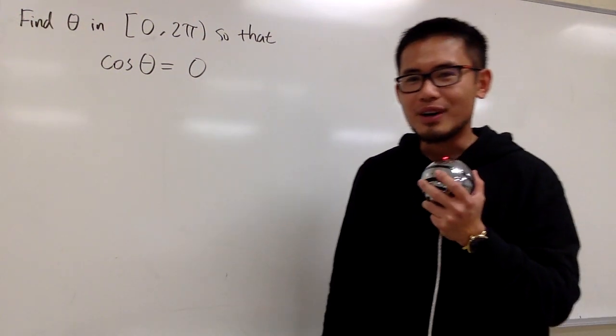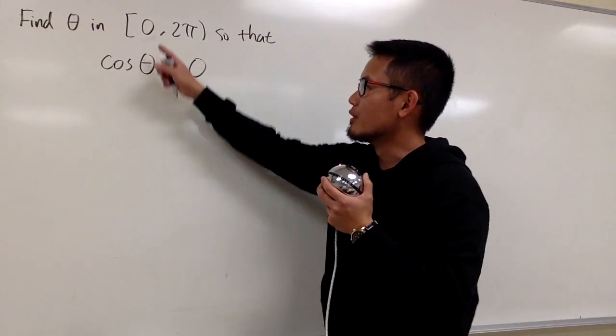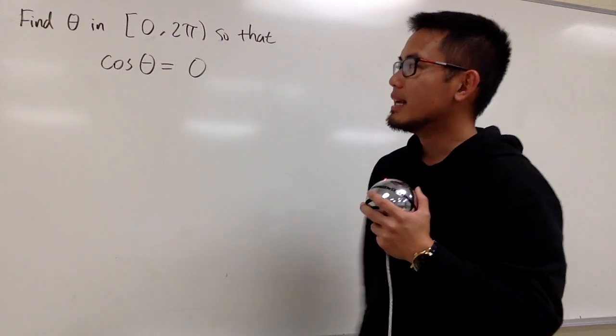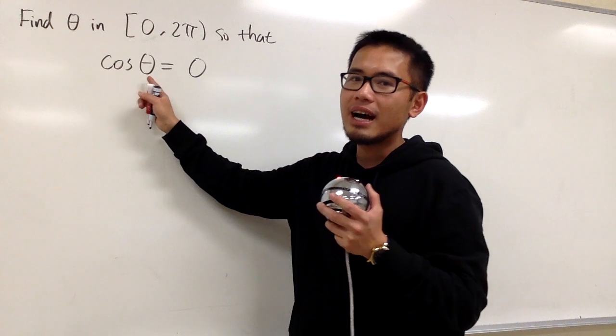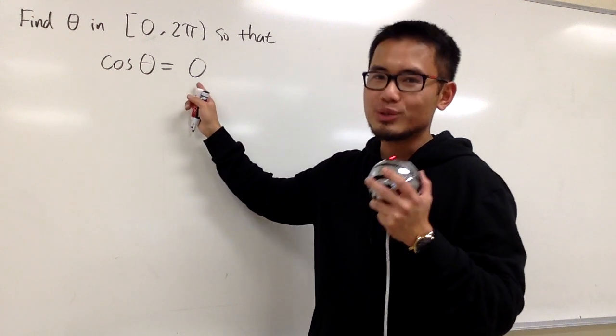We're going to find all the trig values in the interval 0 to 2π, such that cosine θ is equal to 0.